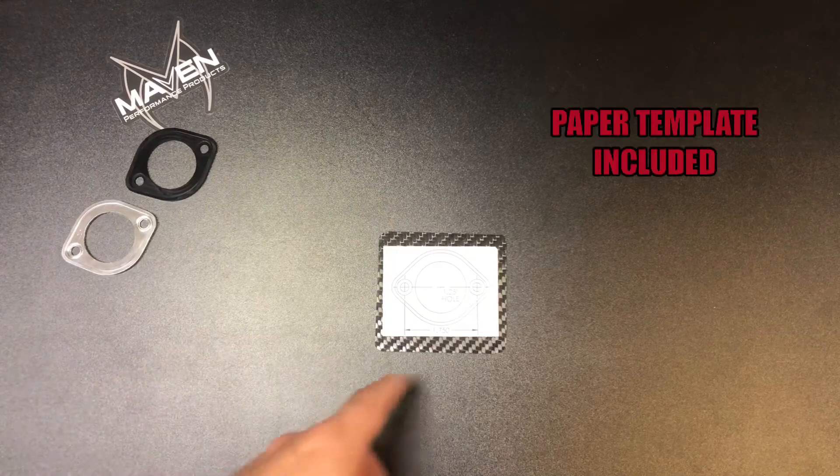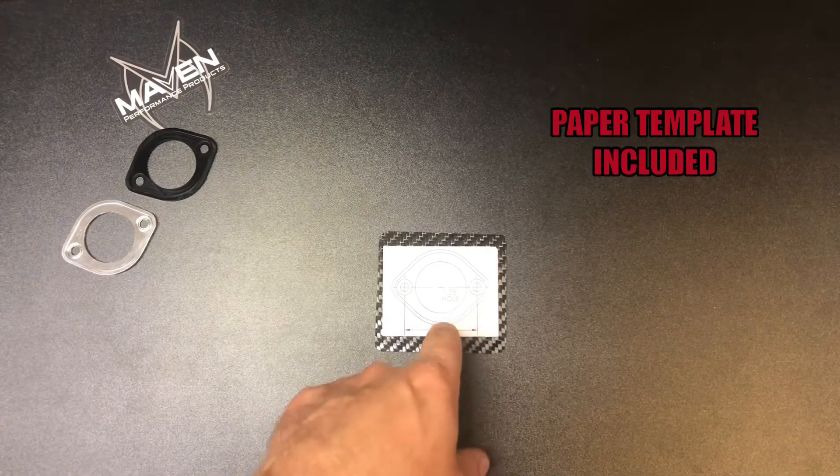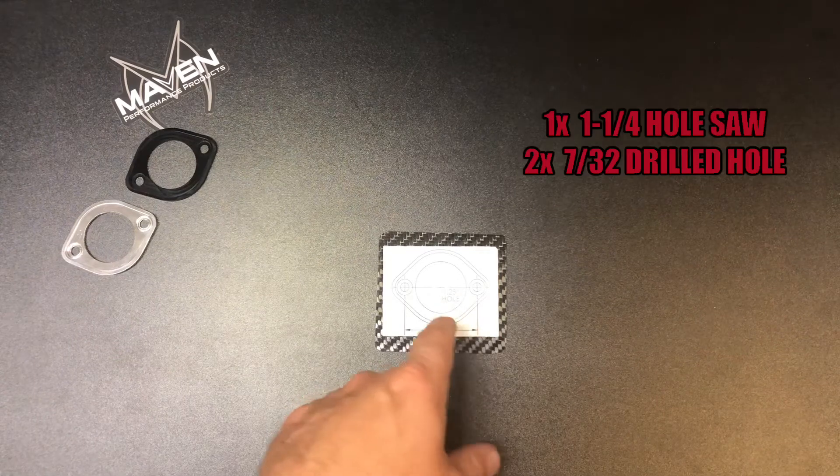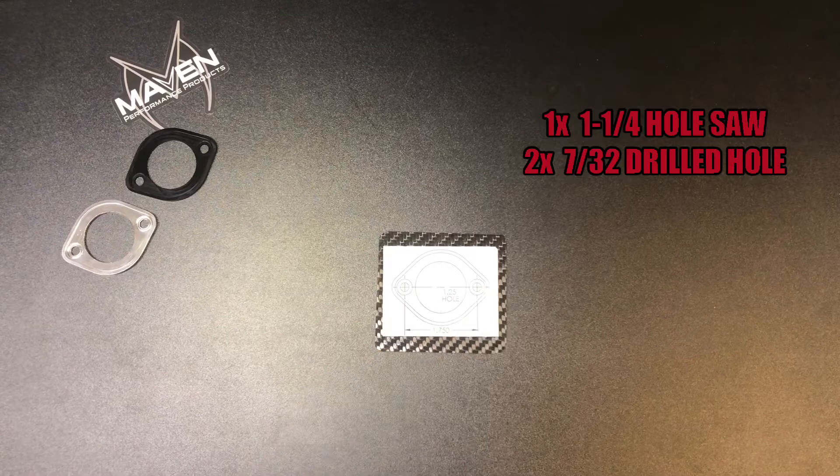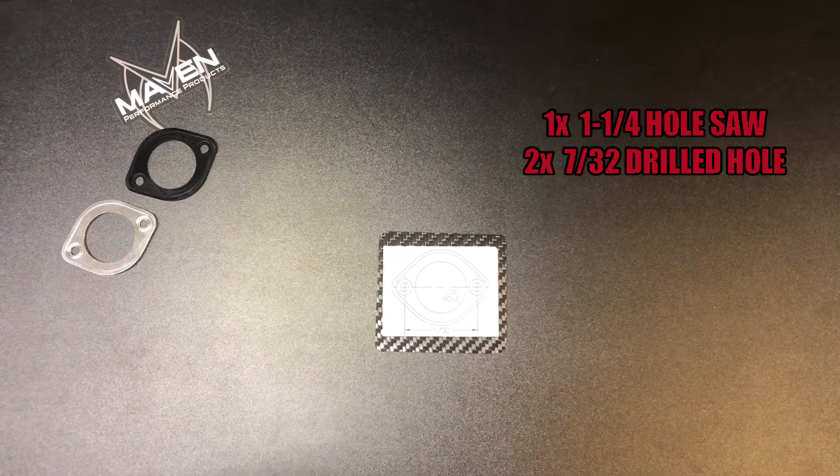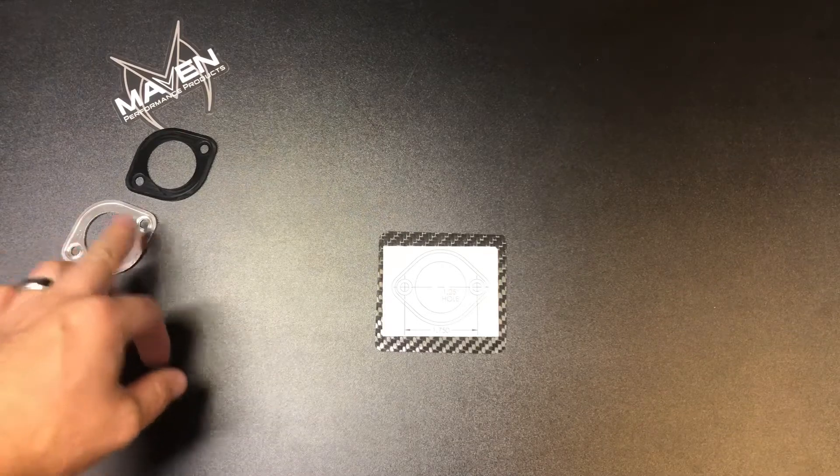Each kit includes a little paper template to help you mark out the holes. This is a one and a quarter inch hole saw to go through your firewall, and then a single hole on each side. Start small, drill up to 7/32 size, and that'll be enough to get you through the little plate.